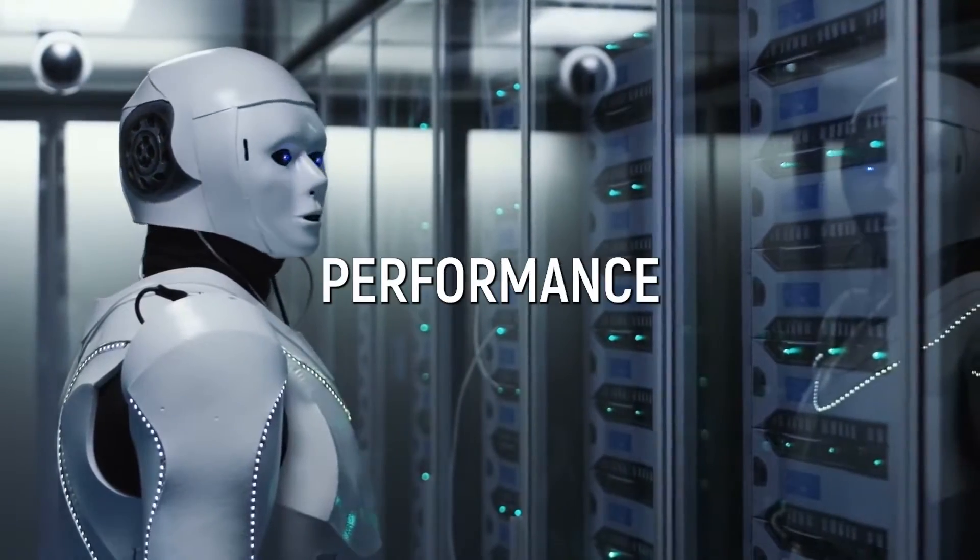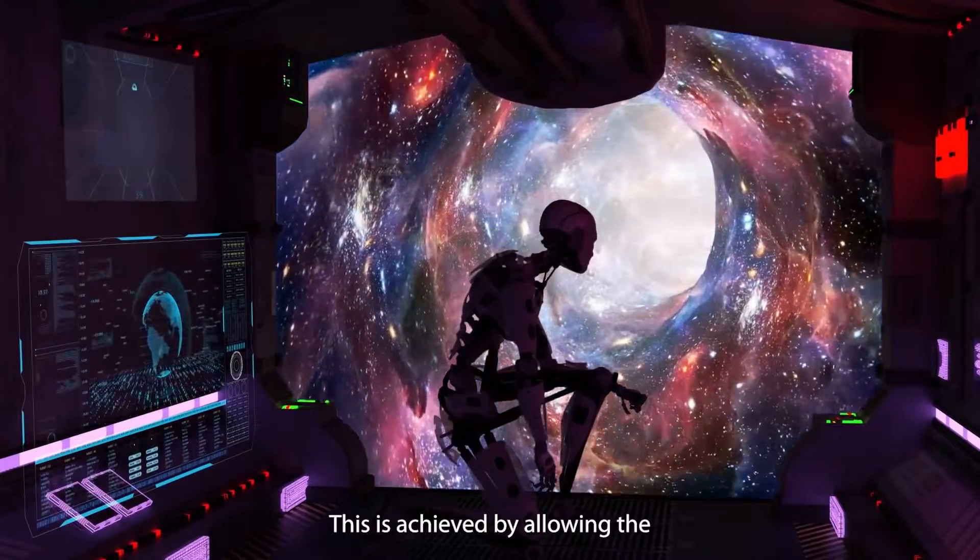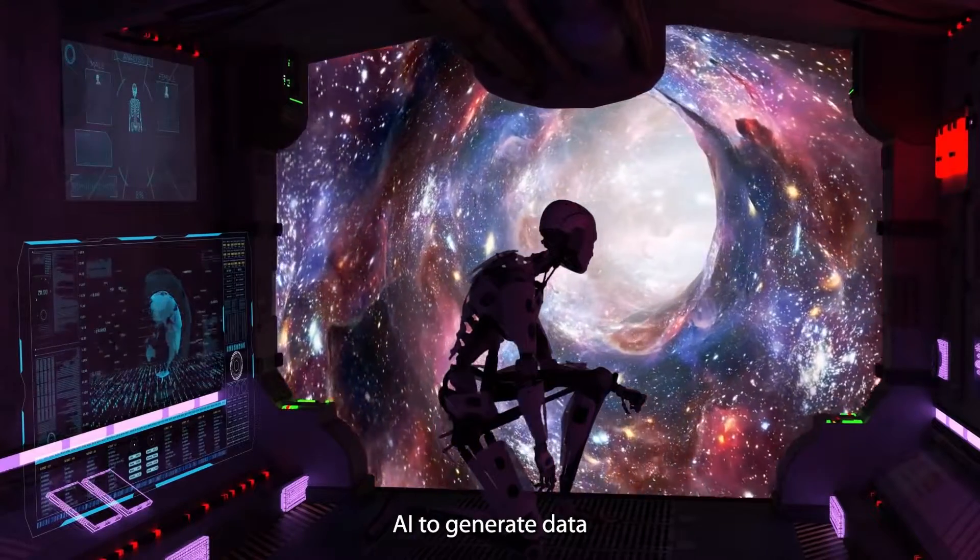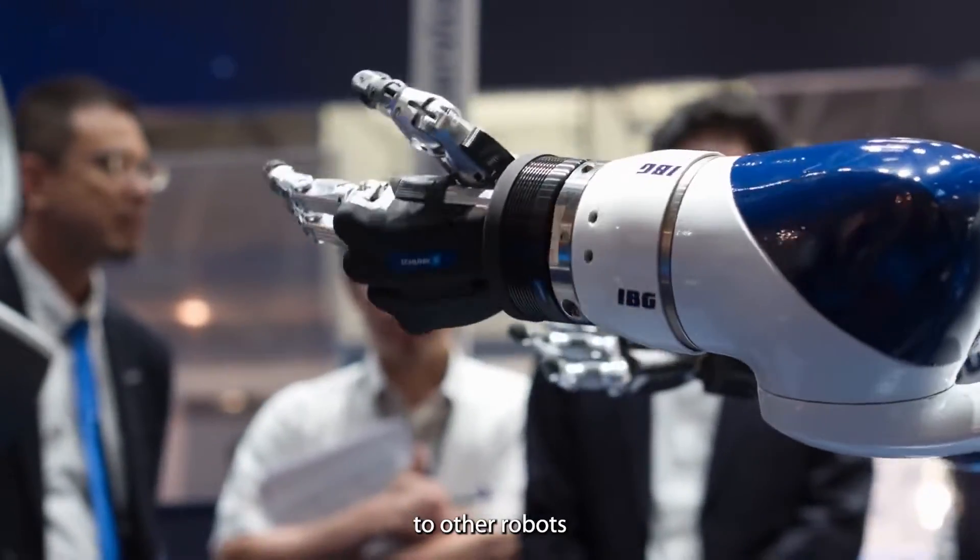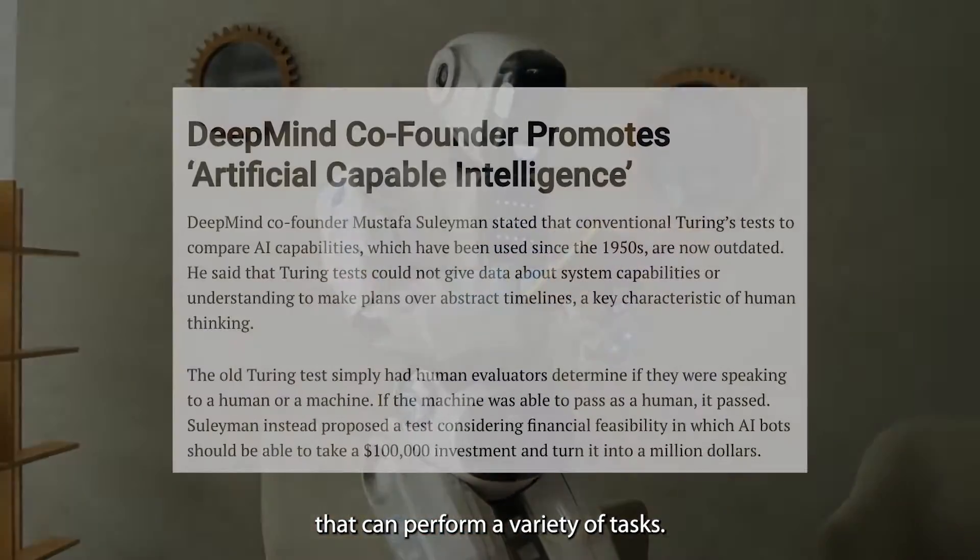RoboCat can improve its own performance without human intervention. This is achieved by allowing the AI to generate data that can be used to improve its own techniques, which can then be transferred to other robots that can perform a variety of tasks.